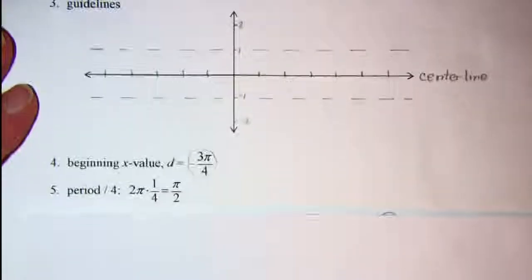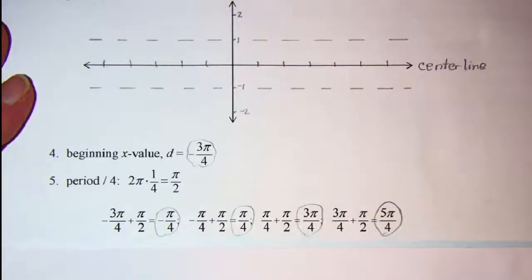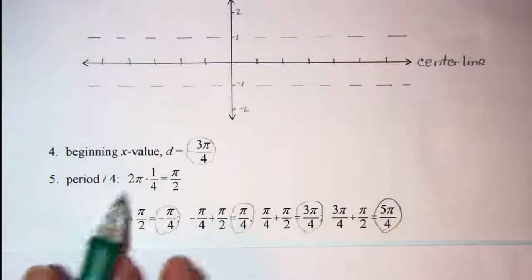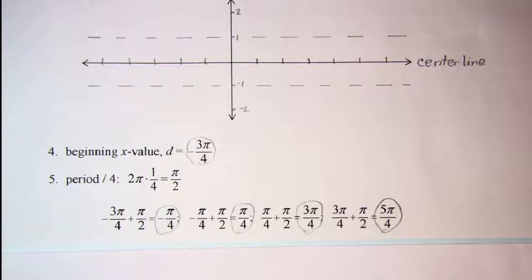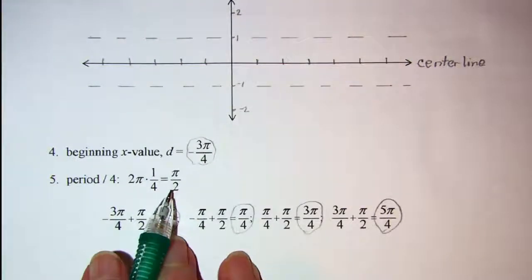And then we take our period of 2 pi and divide it into 4 equal parts, and we see that pi over 2 will be the distance for every quadrant.